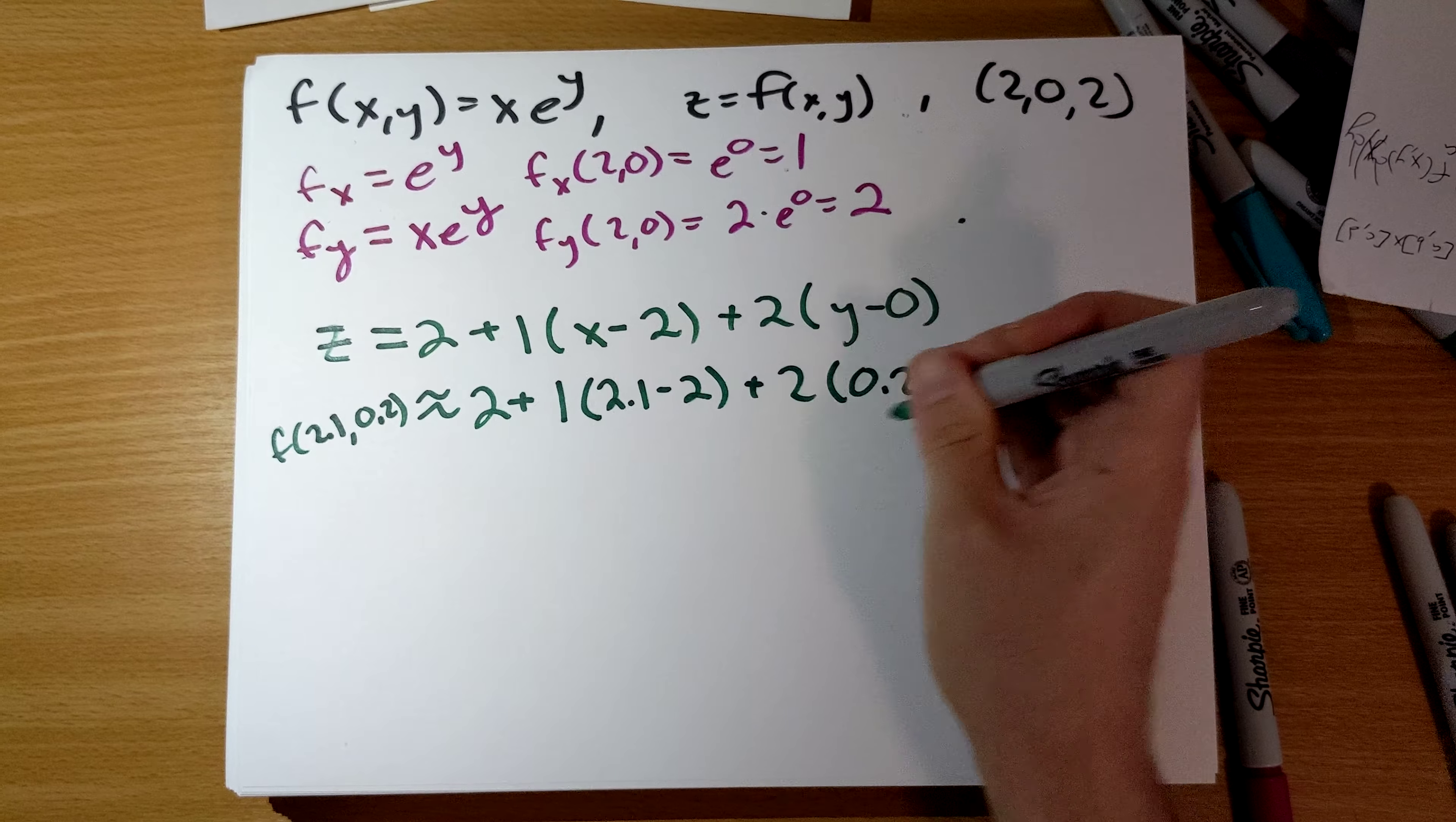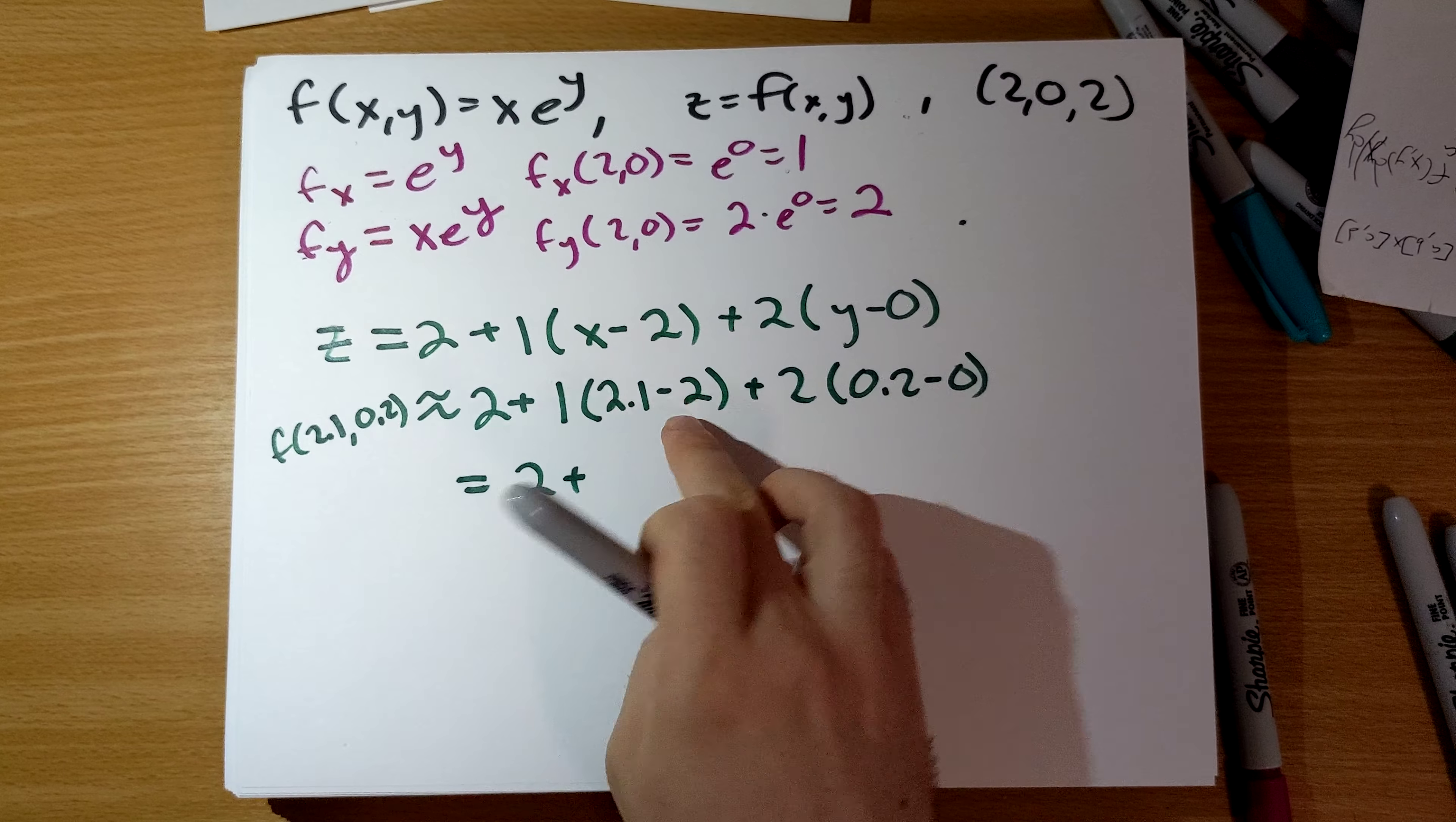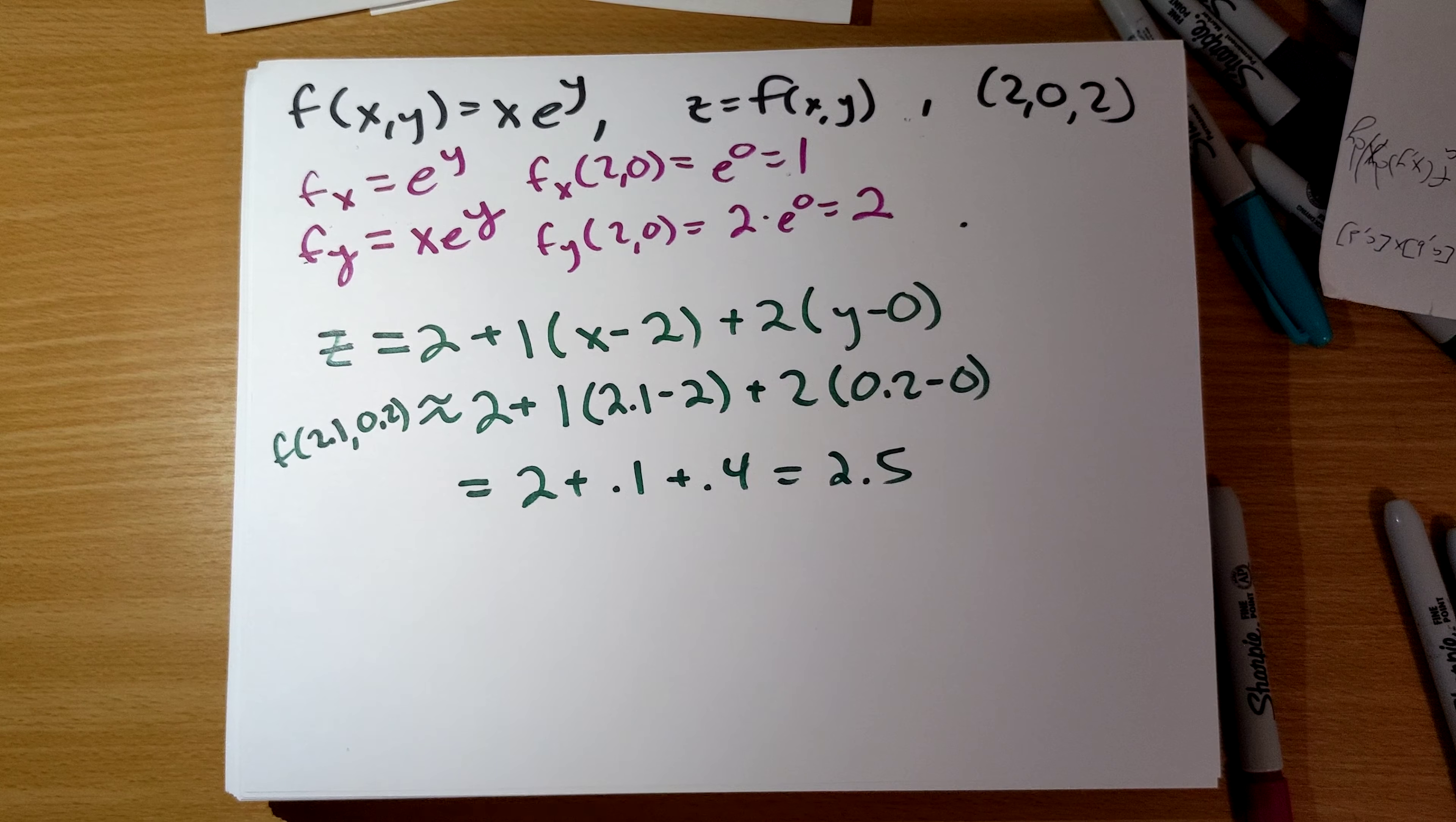Partial derivative with respect to x is e to the y. Partial derivative with respect to y is x e to the y. At the point x is 0, sorry, x is 2, y is 0.